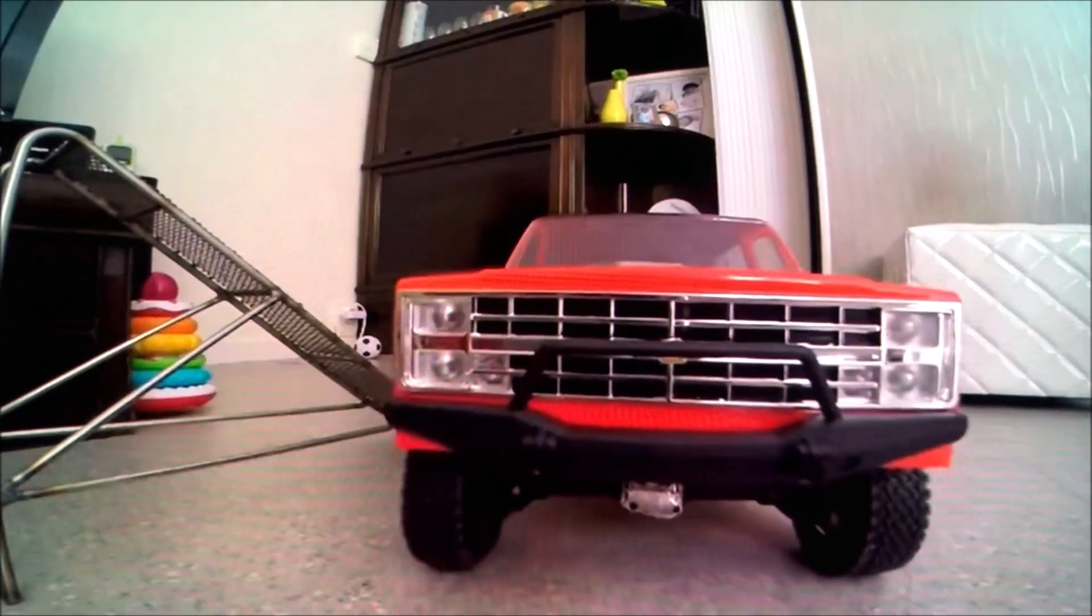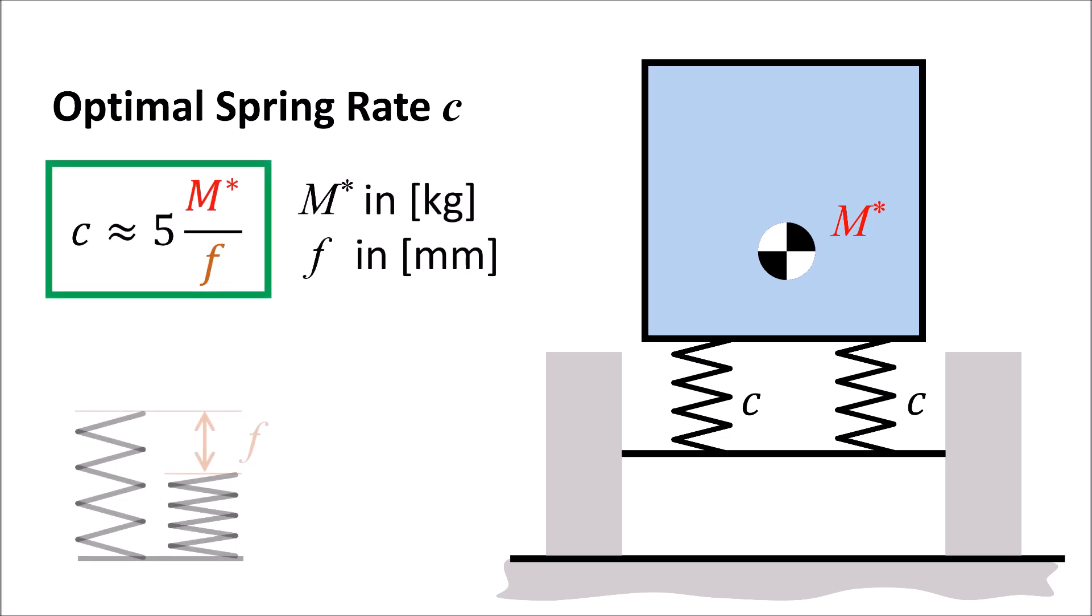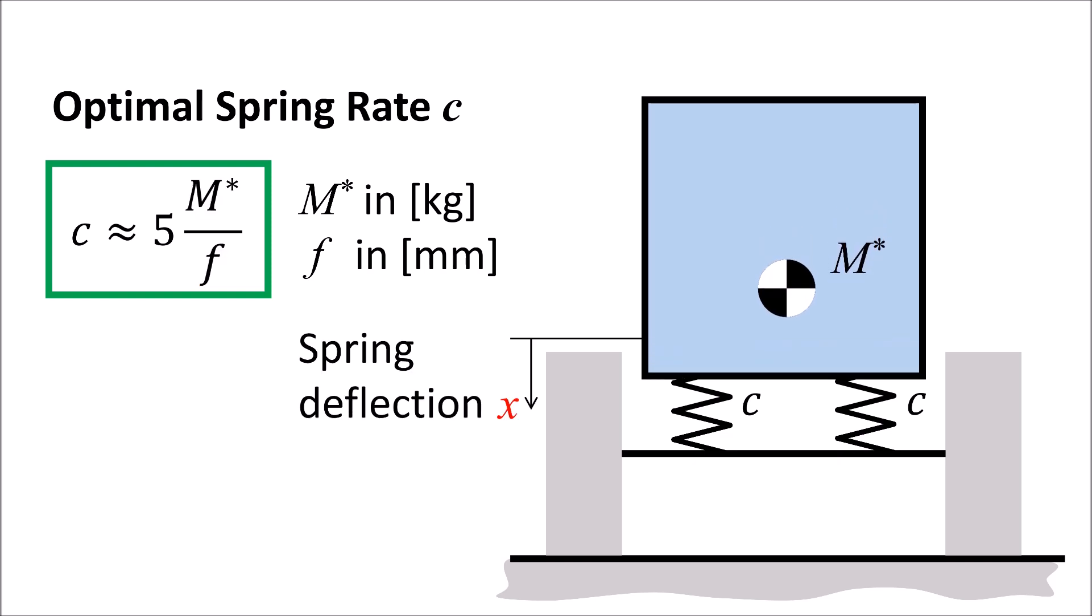The optimal spring rate C can be computed knowing the mass M star of the components that are placed above the springs and the maximum suspension travel F. This optimal spring rate leads to a spring deflection X which is half of the maximum travel.